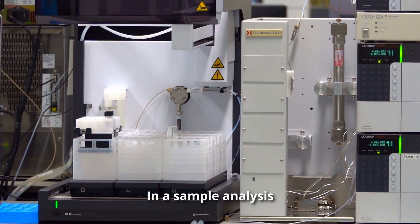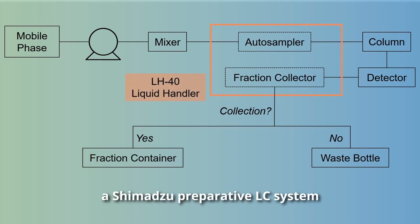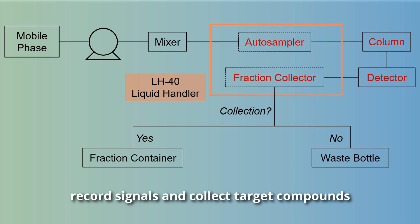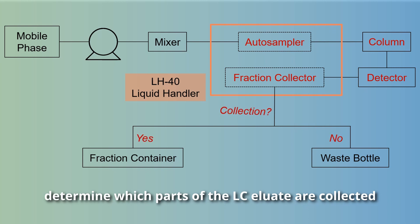In a sample analysis, a Shimadzu Preparative LC System can inject a sample, separate compounds, record signals, and collect target compounds. The signals and fraction collection methods determine which parts of the LC eluent are collected.